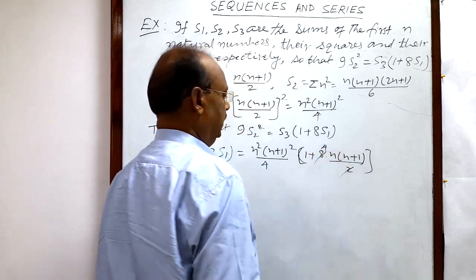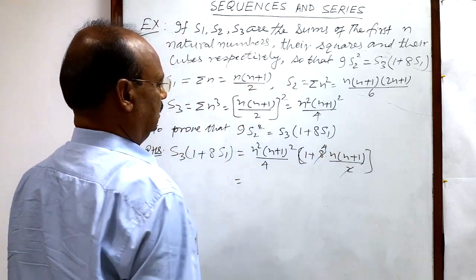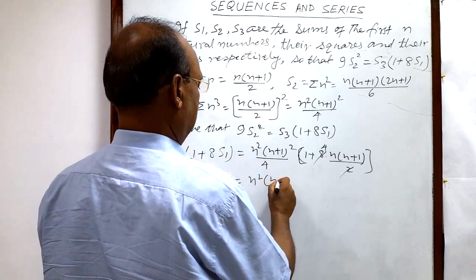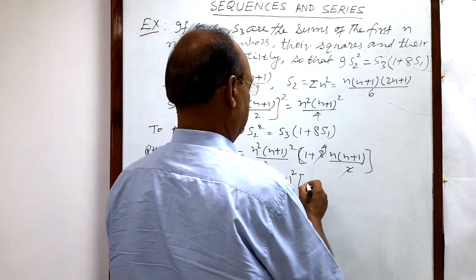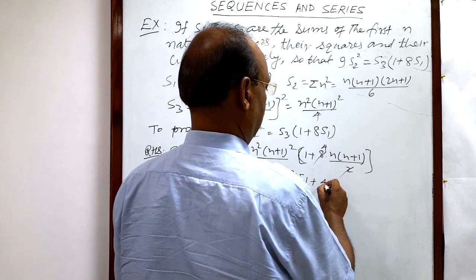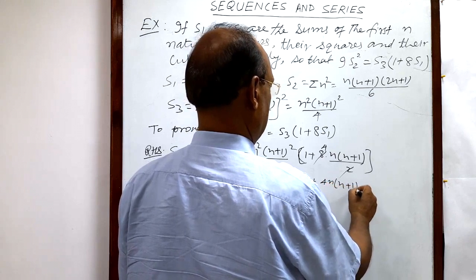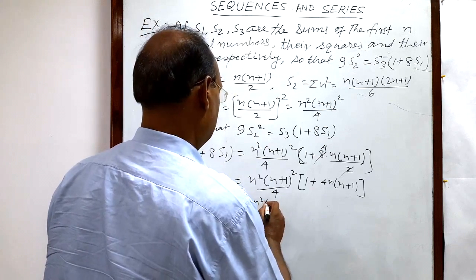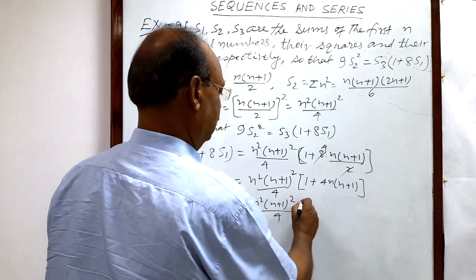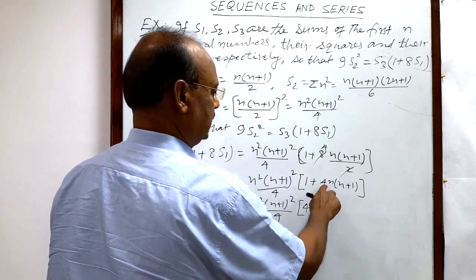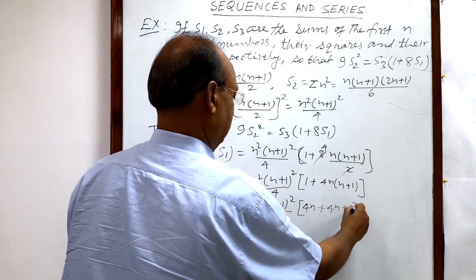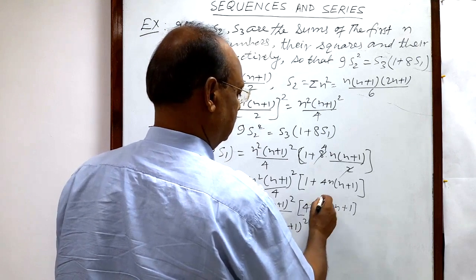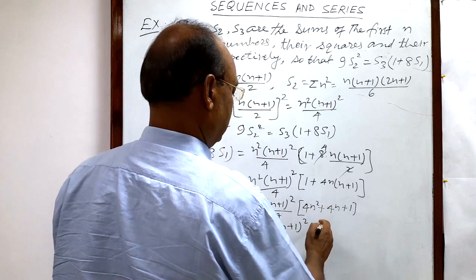Simplifying: the 2 cancels with the 8 to give 4, so we have n²(n+1)²/4 times (1 + 4n(n+1)). Expanding inside the bracket: this becomes n²(n+1)² times (4n² + 4n + 1) divided by 4, which equals n²(n+1)²(2n+1)² divided by 4.